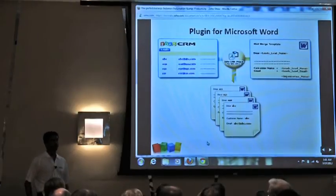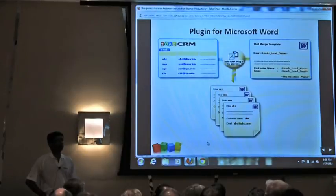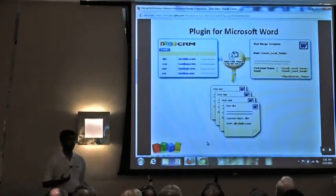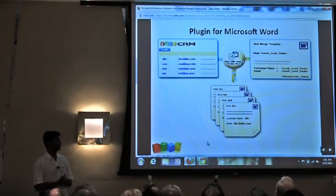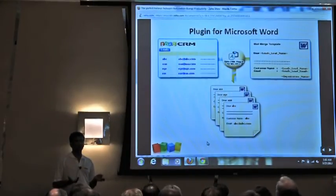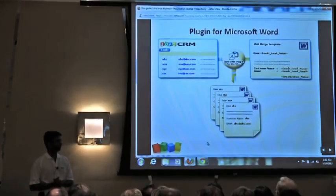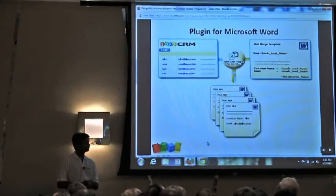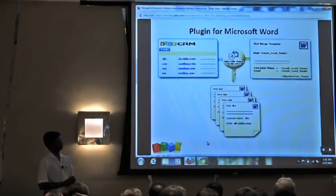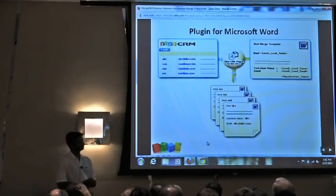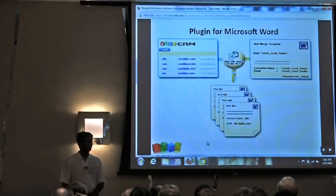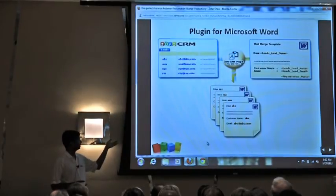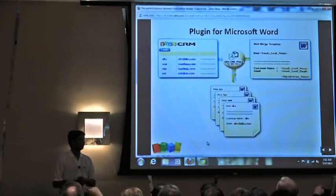Next is the plugin for Microsoft Word. This enables you to select records from the CRM and use the plugin to print out personalized documents — for example, if you need to generate hundreds of letters to be sent through postal mail. The printout is personalized to the list of contacts or leads and can be sent as postal mail, making that process much easier.